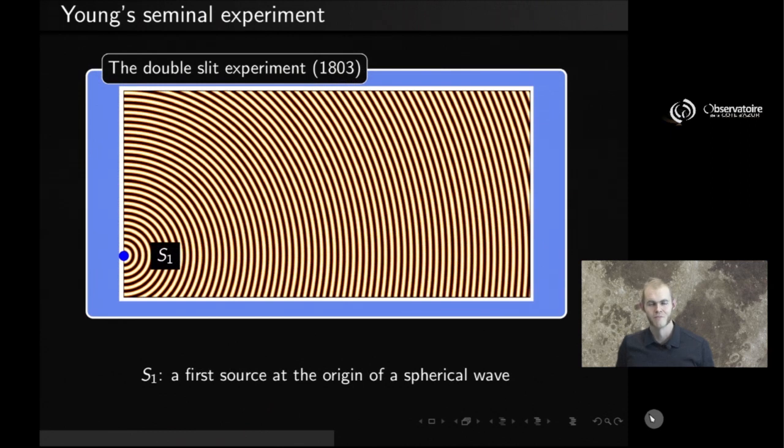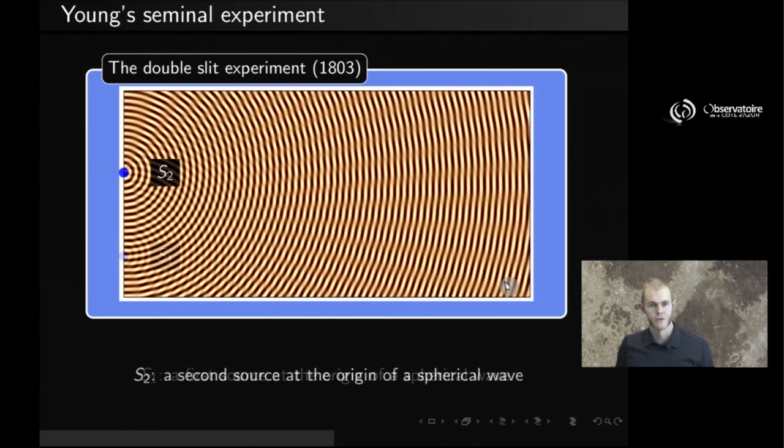The double slit experiment uses two coherent light sources. We're not going to look into how those light sources are made coherent. We just assume we have them ready to go. So this is how our setup is made. This is our first source, S1, and S1 is at the origin of a series of spherical waves that propagate from S1 all the way down to the end of our setup. And just like for S1, we have a second source, S2, also at the origin of spherical waves that propagate all the way down to the end of our setup.